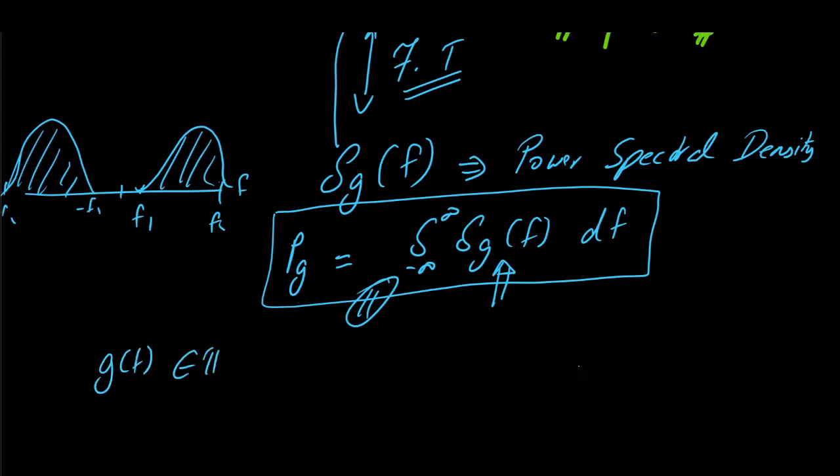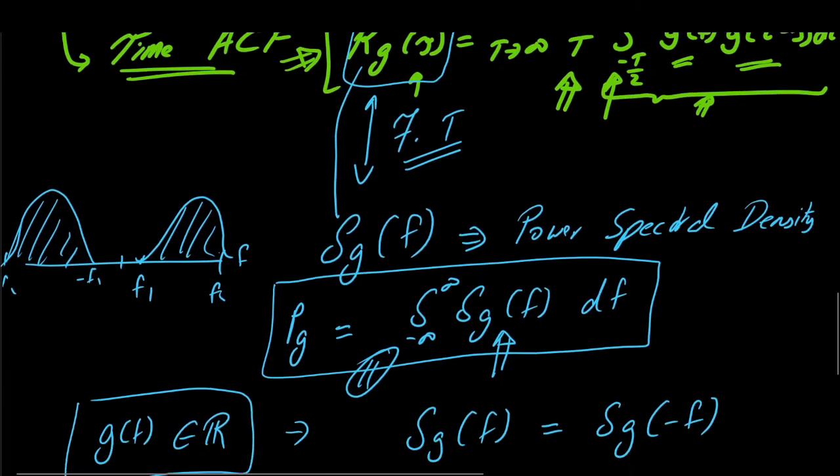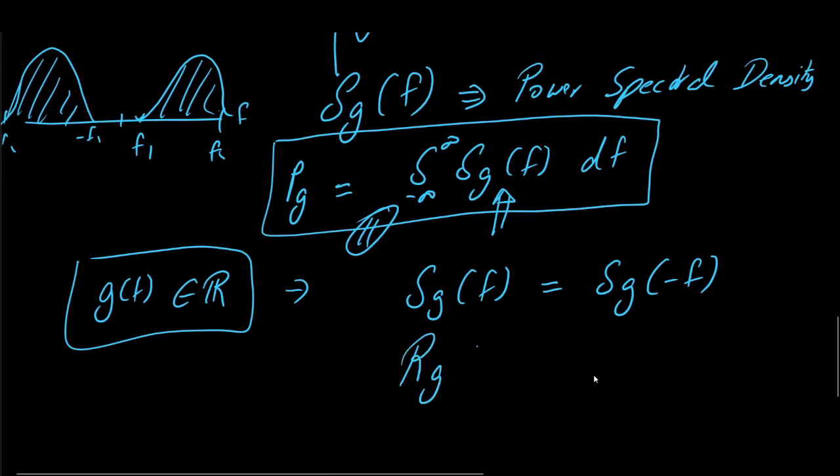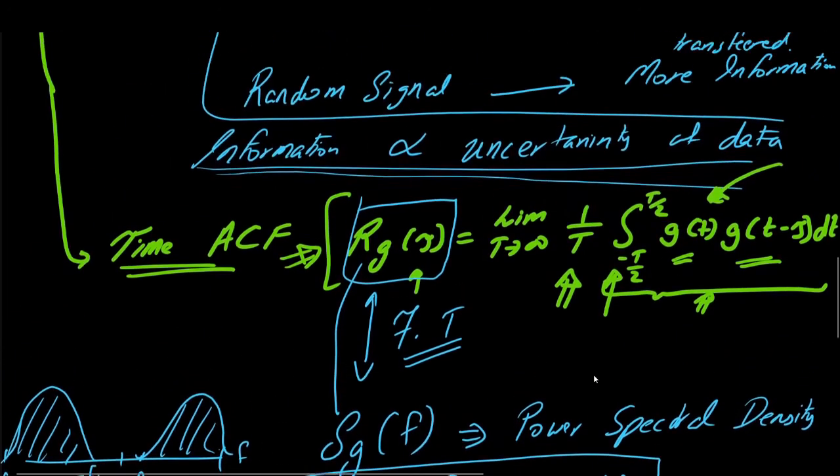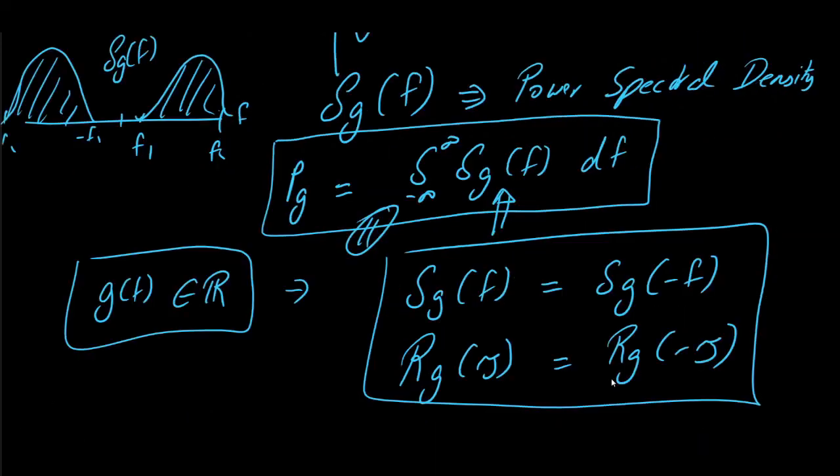Again, if g of t belongs to real numbers or real signals, in that case, this power spectral density, that is Sg of f, this is an even function. And hence it is equal to Sg of minus f. And moreover, the autocorrelation function, that is Rg of tau, this is also an even function. The amount of shift towards right or towards left doesn't matter if the signal is real. And we can simplify the autocorrelation function.